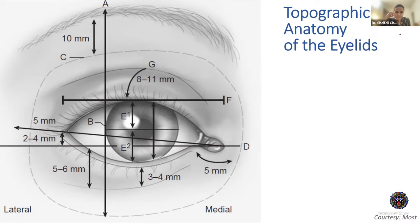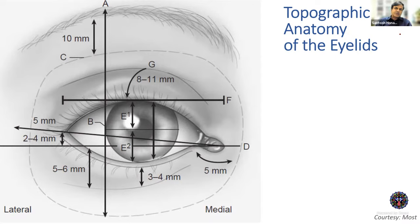When planning blepharoplasty, ask the patient to look down and measure the vertical lid height from the superior orbital margin to the lid margin. You want at least 18 mm of lid left at the end of blepharoplasty; the normal range is 20 to 24, even 25–26 mm. It is grossly increased in patients with certain conditions. When you have a patient with grossly increased vertical and horizontal lid height, you are thinking of a particular condition — euryblepharon.